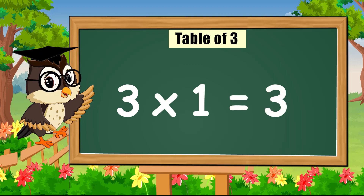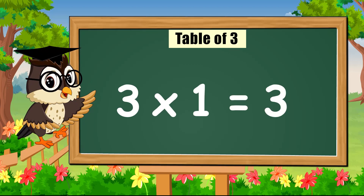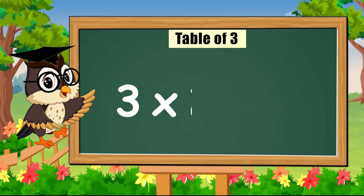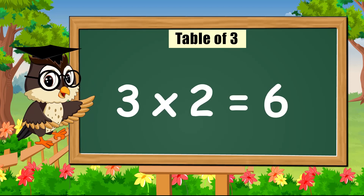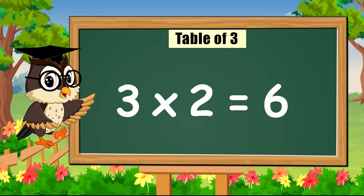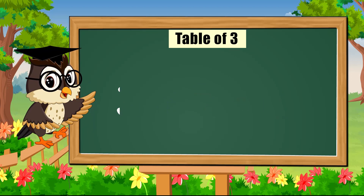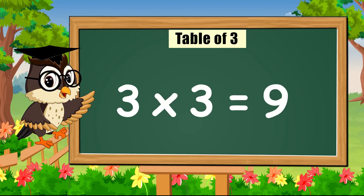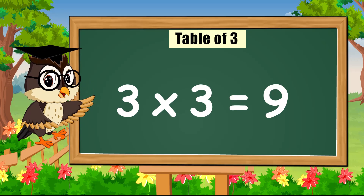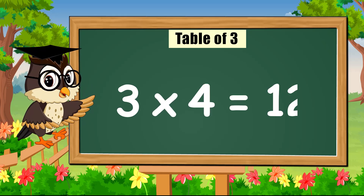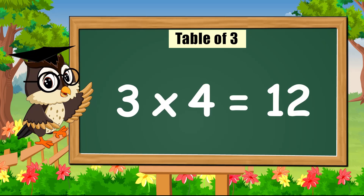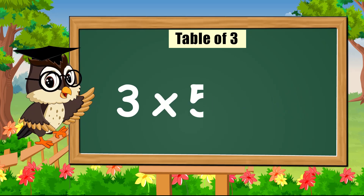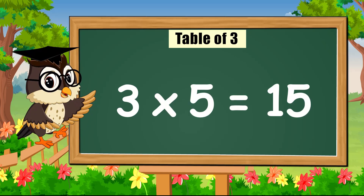Three times one is three. Three times two is six. Three times three is nine. Three times four is twelve. Three times five is fifteen.